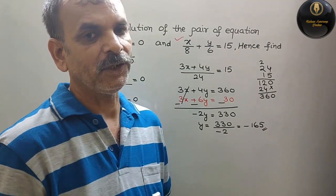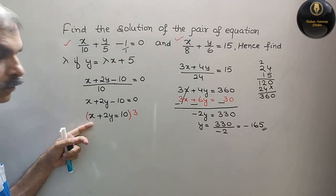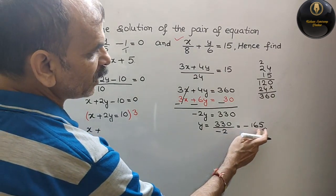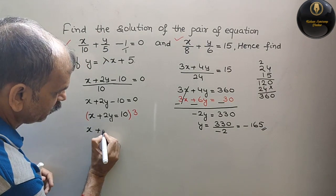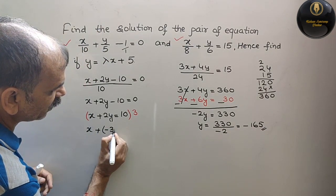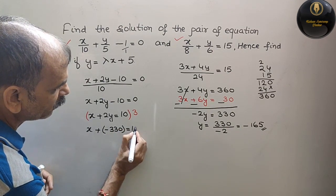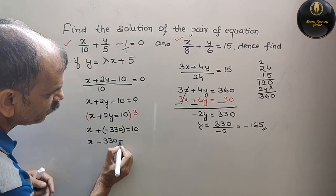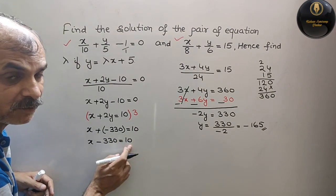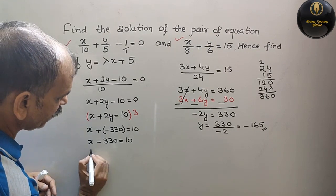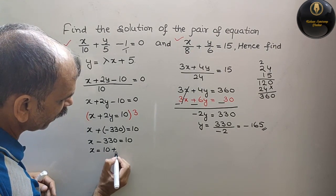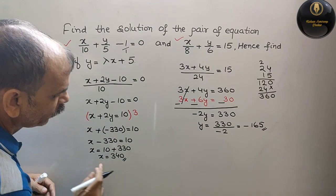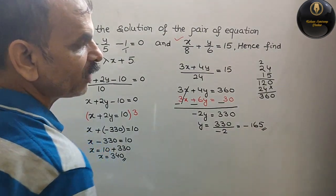अब x की value निकालते हैं। पहली equation x + 2y = 10 में y = -165 put करते हैं। तो x + 2×(-165) = 10, यानी x - 330 = 10। इससे x = 10 + 330 = 340। तो x = 340 और y = -165.